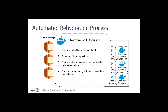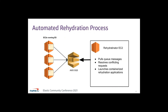Inside each container, the application pulls down the latest keys, passwords, and certs from our credential repository, clones our GitHub repository to access our up-to-date Ansible automation, and determines the type of Elasticsearch node running on the target EC2, then runs the corresponding automation to perform the rehydration. When all of the applications have finished, a validation script runs to ensure that each instance for which a container was launched has in fact been terminated. If it hasn't, that indicates a failed rehydration and we get alerted on it.